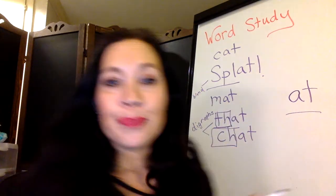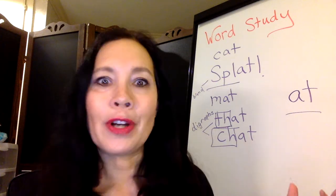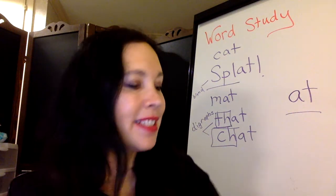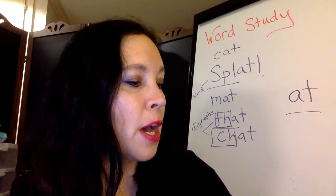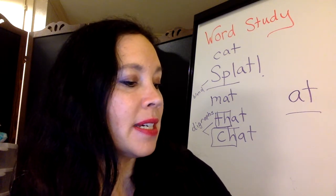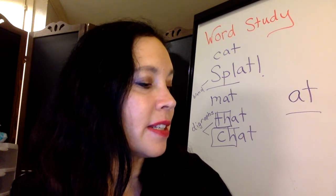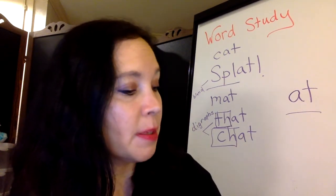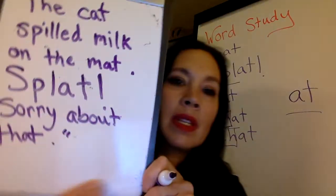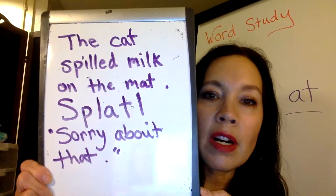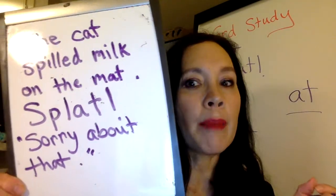So, going back to our poem. The cat says, 'Sorry about that.' I'm going to write that down: sorry about that. I'm going to put my quotation marks because he said something. So here's our poem so far: the cat spilled milk on the mat. Splat! Sorry about that.